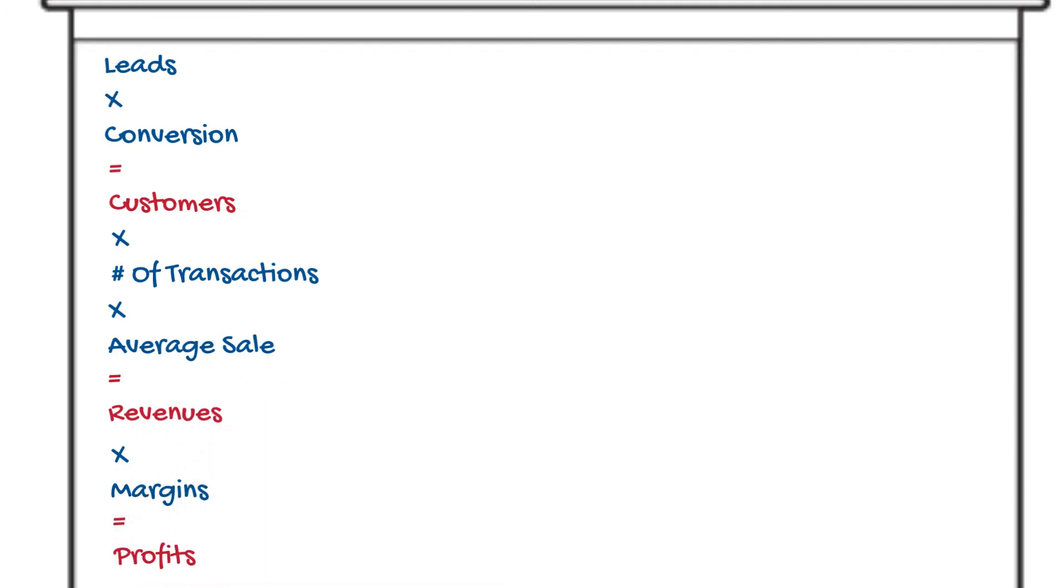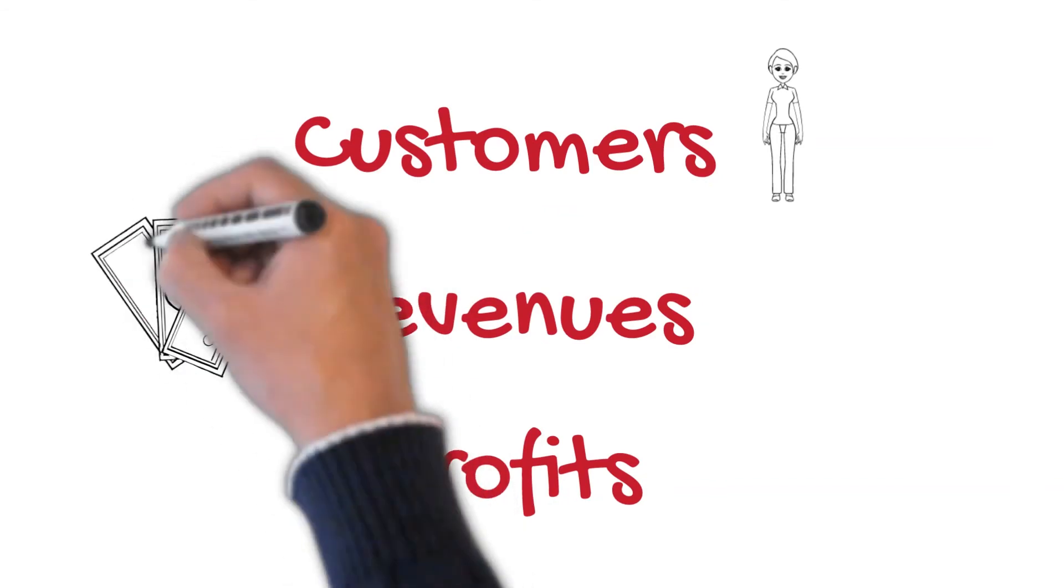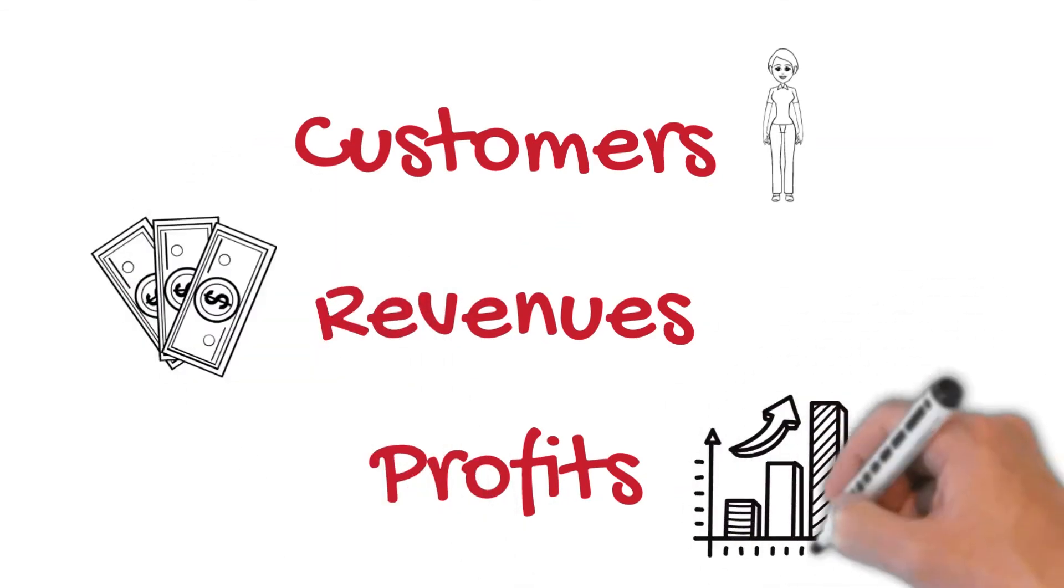The five ways. See people ask me about three things: customers, revenues and profits. I put them up here in red.